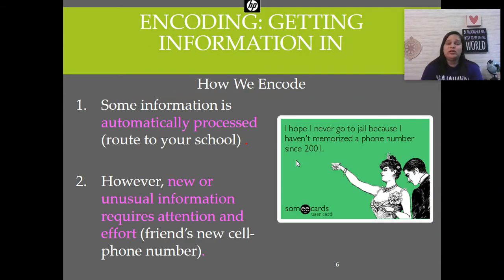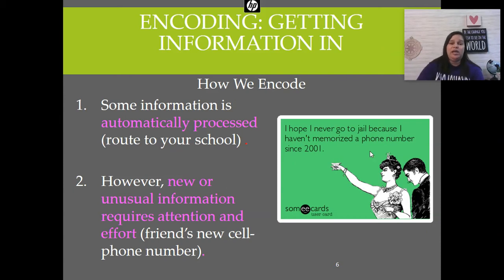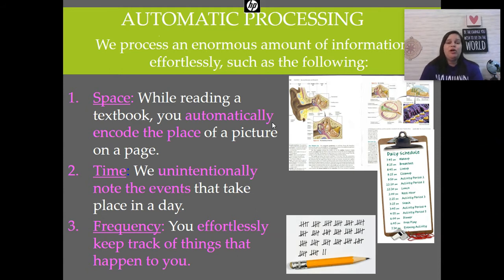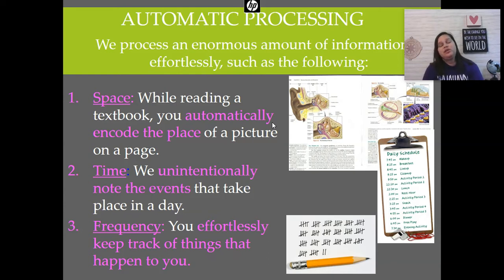Encoding is all about how we get information into our brain, and there are two ways: automatic processing and effortful processing. Some things are automatically processed, like locations or your route to school. But if something is new or unusual, it requires more effort. We automatically encode space — where things are on a page or picture — time, like noting whether something happened before lunch or during third period, and frequency, keeping track of how often things happen to us.